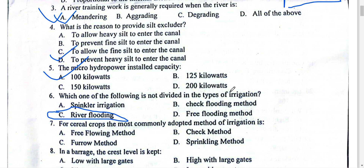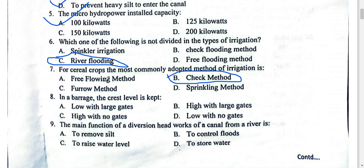Question number 7: serial (furrow) irrigation is the most common method of irrigation. Check flooding is used when you see wave patterns across different areas. Full border flooding can be used for crops like potato and tomato. Check flooding is suitable for rolling land.